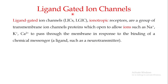A good example of a ligand would be a neurotransmitter. When a neurotransmitter binds to an ion channel and opens it, that allows the movement of ions, which changes the electrical potential of that particular part of the neuron. In the next video I'll be giving you two of the most important examples of ligand gated ion channels.